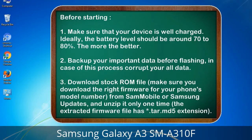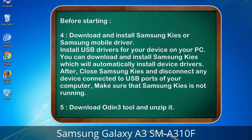3. Download the stock ROM file. Make sure you download the right firmware for your phone's model number from Sammobile or Samsung Updates, and unzip it only one time. The extracted firmware file has a .tar.md5 extension. 4. Download and install Samsung KIES or Samsung mobile driver to install USB drivers for your device on your PC. Samsung KIES will automatically install device drivers. After installation, close Samsung KIES and disconnect any device connected to USB ports, making sure Samsung KIES is not running.